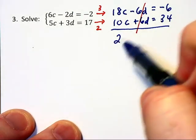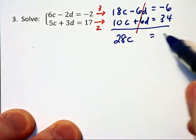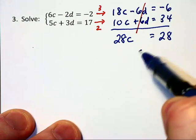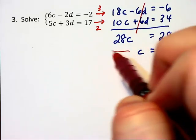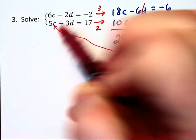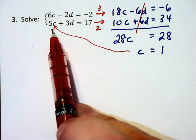And we're left with 28c equals 28, implying that c is equal to 1. Now we need to go and substitute c in to find a value of d. And I'm going to do it right here, substituting in for c in the second equation.